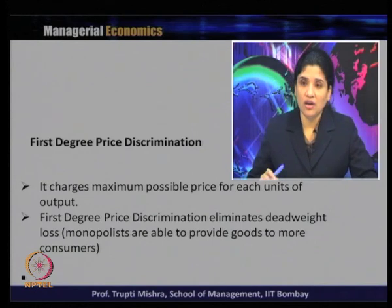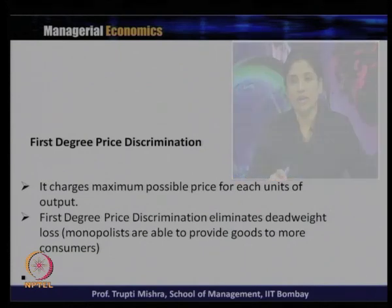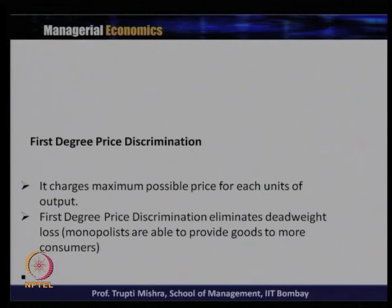We will take graphical examples to understand how the monopolist, by practicing first degree price discrimination, takes out all consumer surplus. There is also no dead weight loss, because dead weight loss arises when price increases and quantity decreases, but here the producer is ready to supply whatever goods come at that price, and therefore the entire consumer surplus goes into the account of producer surplus.